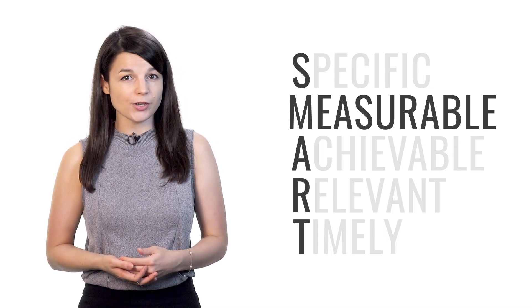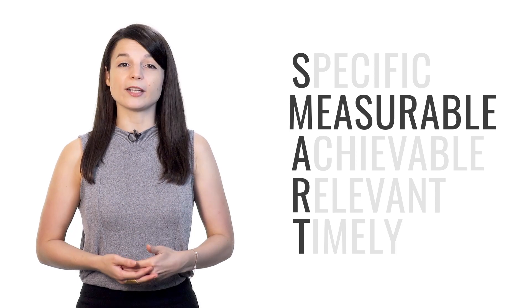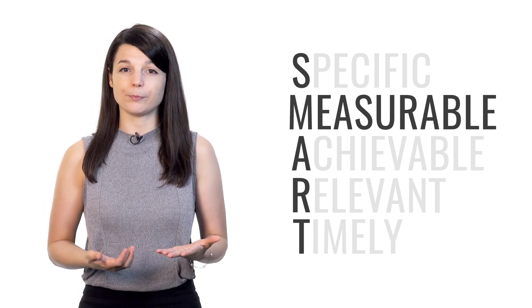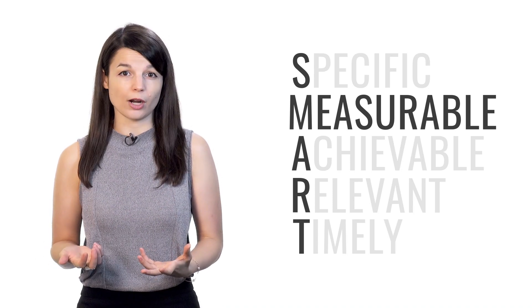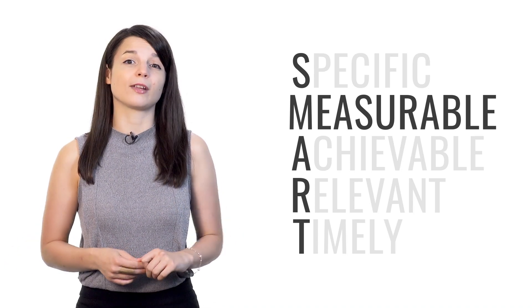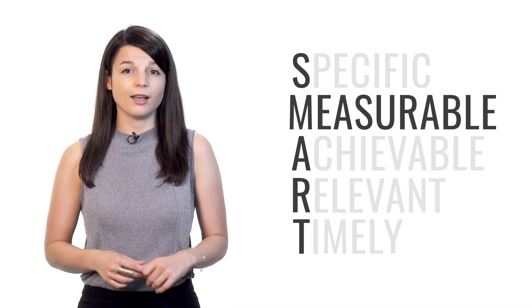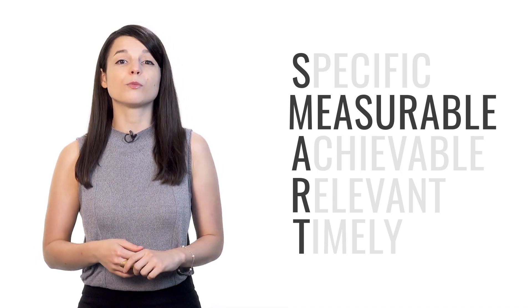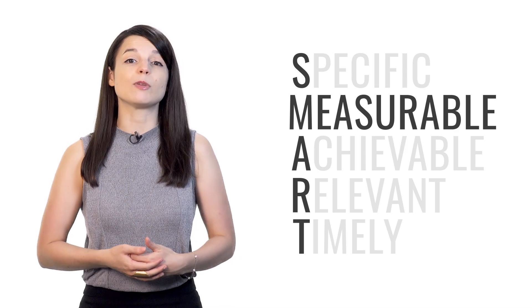M stands for measurable. Your goals should be quantifiable. They should be able to indicate progress in some way. You have to be able to track your progress. Otherwise, you won't know if you're getting any closer to your goal. As you see yourself getting closer and closer to your goal, your motivation will go up. So your goals need to be measurable.